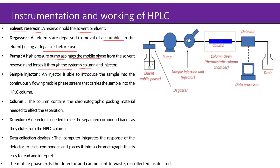The main purpose of the pump is to send the solvent or mobile phase or eluent at high pressure into the column. Then comes the sample injector. An injector is able to introduce the sample into the continuously flowing mobile phase stream that carries the sample into the HPLC column. The main point to keep in mind is that the injector is not putting the sample directly into the column, but is injecting the sample into the solvent stream that has been created by the pump at high pressure.